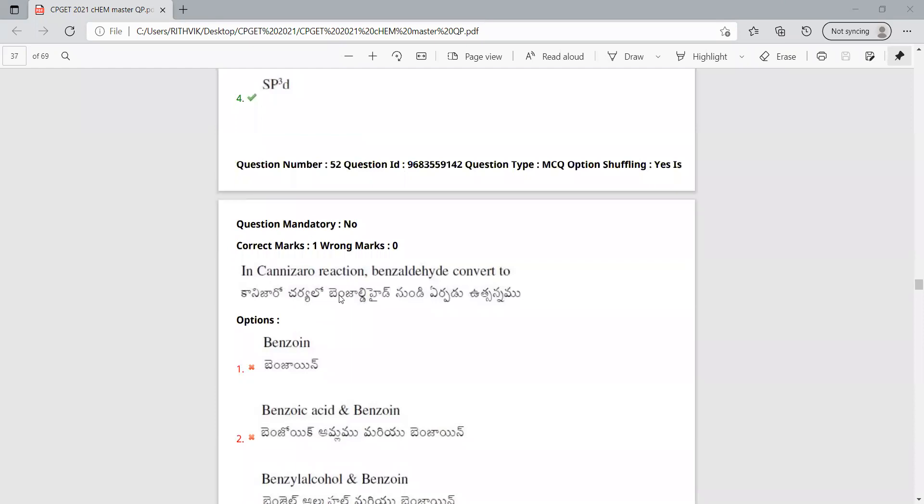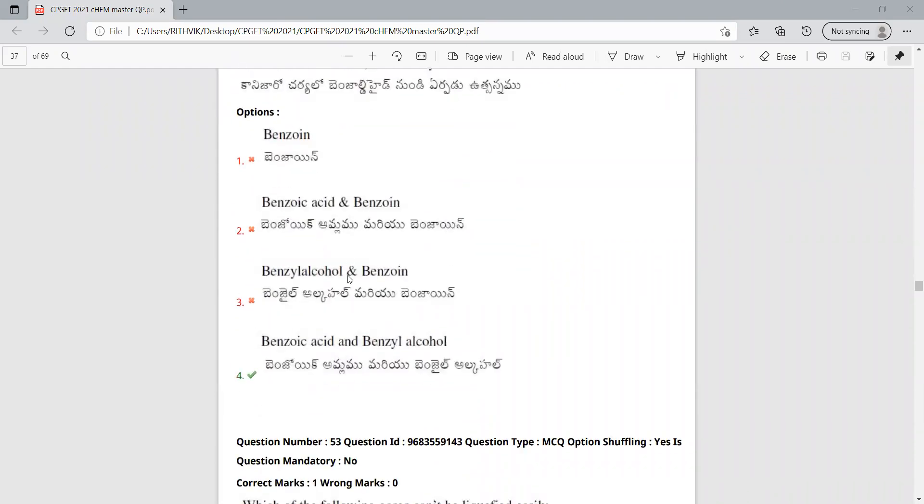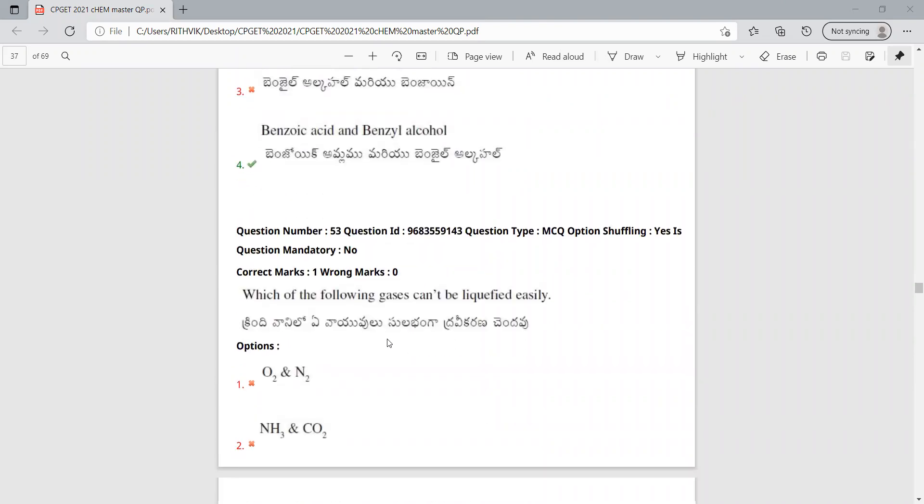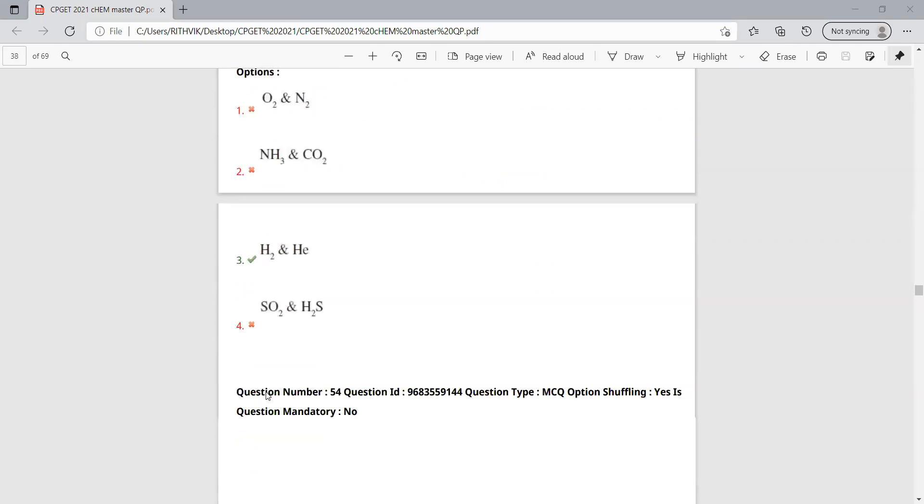Then in Canizaro reaction, benzoyl aldehyde is converted to benzoyl alcohol and benzoic acid. This is again a direct question. These are permanent gases, direct question.